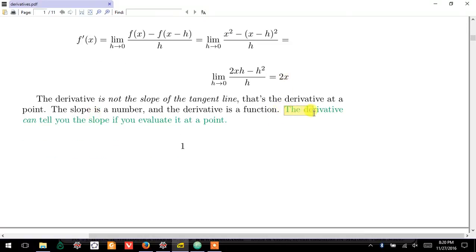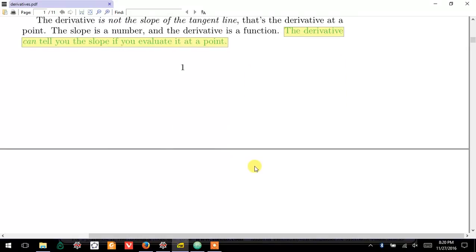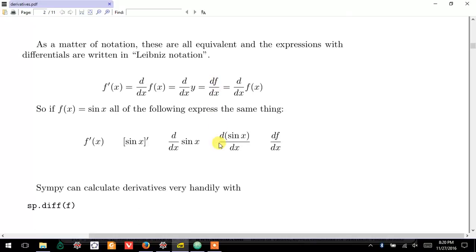And the important lesson is that the derivative, although it is not the slope, it can tell you the slope of the tangent line if you evaluate it at a particular point.